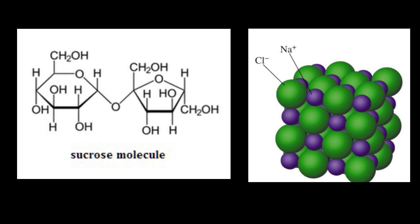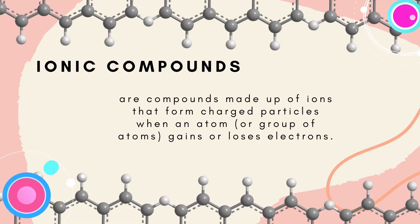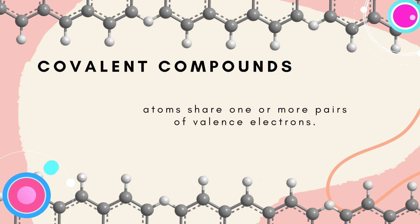These bonds affect the melting point of sugar and salt, and this introduces us to ionic and covalent compounds. Ionic compounds are made up of ions that form charged particles when an atom gains or loses electrons. Covalent compounds are atoms that share one or more pairs of valence electrons.